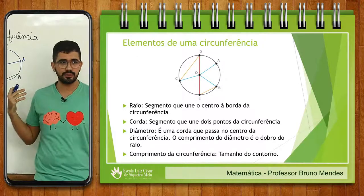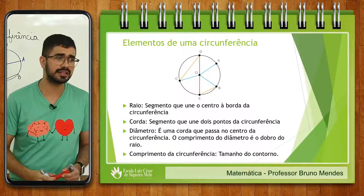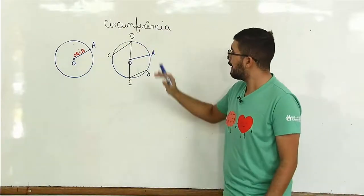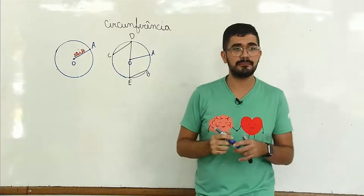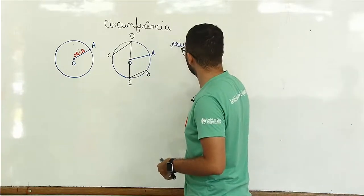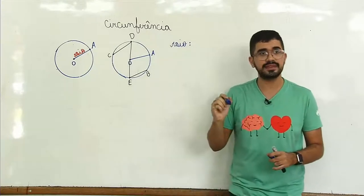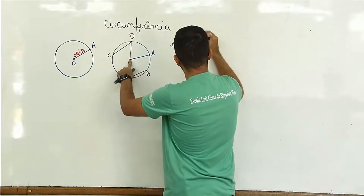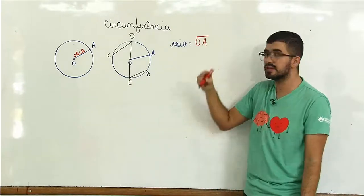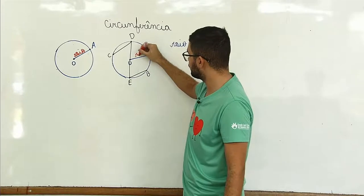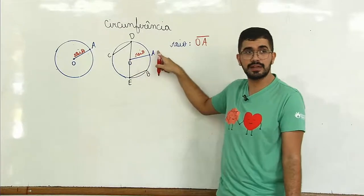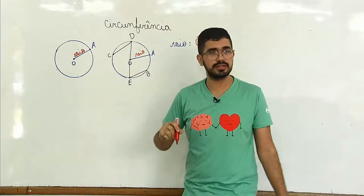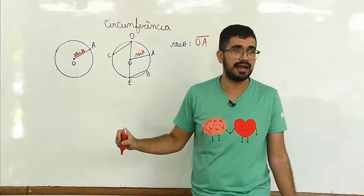Vamos fazer um exemplo. O tio Bruno desenhou aqui uma circunferência. Nessa circunferência, quero anotar qual é o segmento que representa o raio. O raio é o segmento que liga o centro até um ponto da borda da circunferência. O raio nosso aqui seria o segmento OA. Por que ele é o raio? Porque está ligando o centro até um ponto da circunferência. O segmento CD não é raio, pois não passou em cima do centro nem ligou o centro.